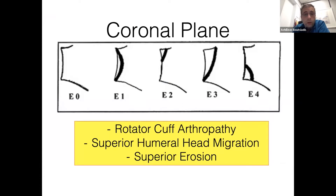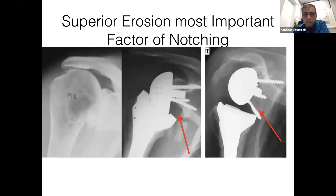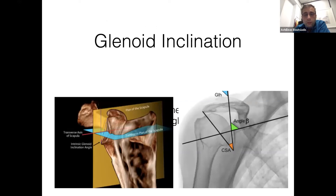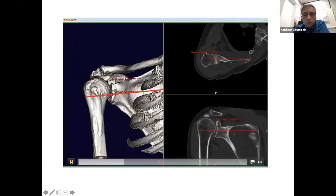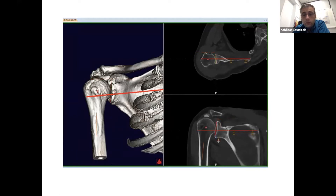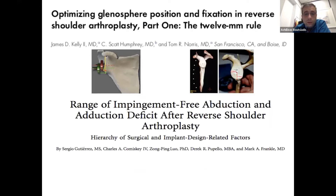In the coronal plane, in cases of rotator cuff arthropathy, we have superior humeral head migration, superior erosion, and we know the Favard classification. Superior erosion seems to be the most important factor in order to avoid notching over time. The glenoid inclination is mainly measured by the beta angle. Using the software, we can measure both the retroversion and the superior inclination. The best position of the base plate for reverse shoulder arthroplasty is on the lower third of the glenoid, with 10 degrees of inferior tilt.